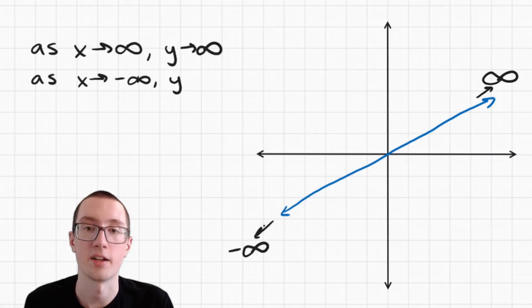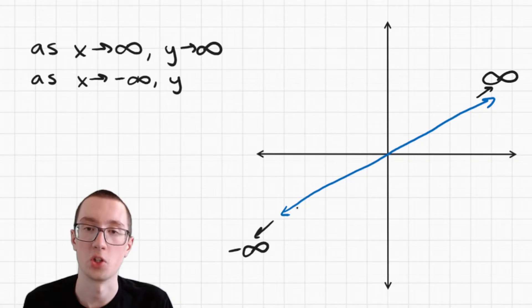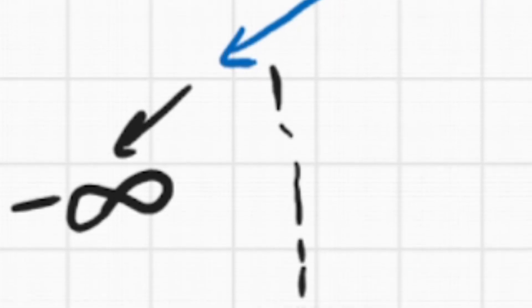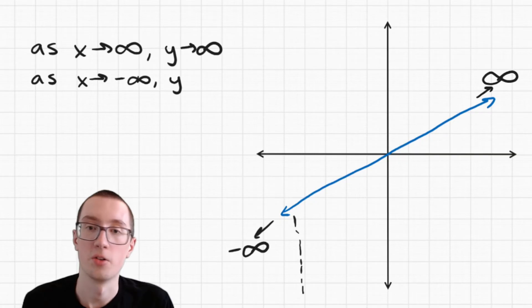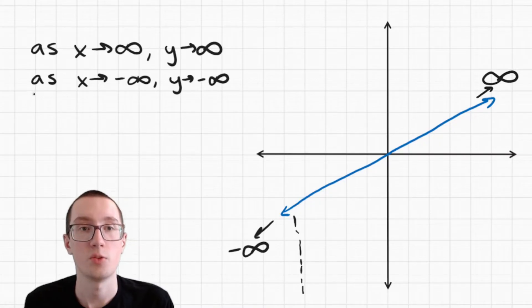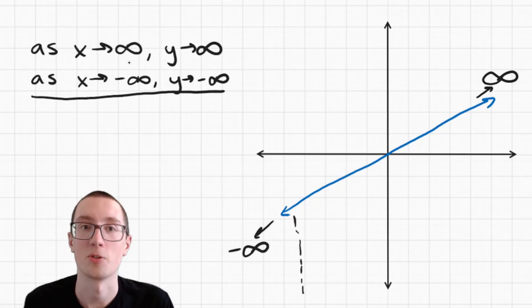But what about over here? As x is approaching negative infinity, what is y doing? Well, the graph is going lower and lower, and as you go lower and lower the numbers get smaller and smaller. They are going to keep going smaller and smaller until we run out of numbers, which will never happen. So y is also approaching negative infinity as x approaches negative infinity. So this is what you would write as your end behavior: as x approaches infinity, y approaches infinity, and as x approaches negative infinity, y approaches negative infinity.